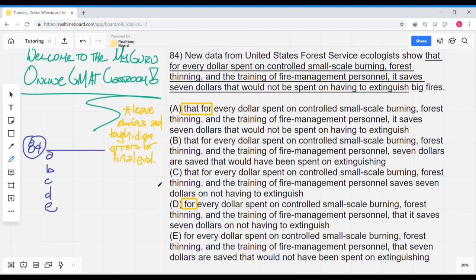So if we read the sentence in its entirety, we get: new data from the United States Forest Service ecologists show that for every dollar spent on controlled small-scale burning, forest thinning, and the training of fire management personnel, it saves $7 that would not be spent on having to extinguish big fires.